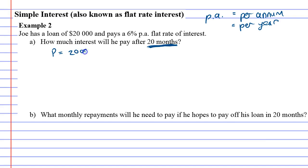Our principal is 20 grand. Our rate of interest is 6% per annum. Now this is a bit of a problem because our time period is 20 months. We'll write that down. N equals 20 months.